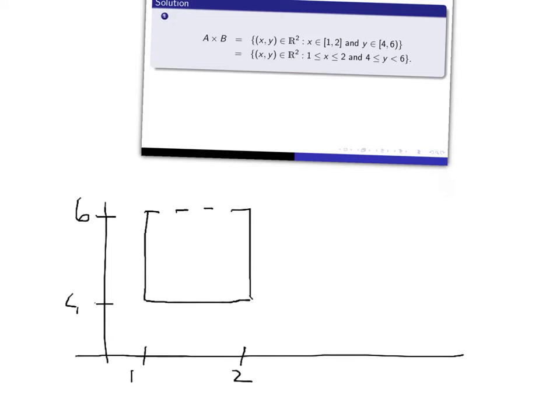Now this gives us further justification for using the notation A × B. If you have an interval you can no longer measure the size of it by the number of elements in it but you can measure the size of it by measuring its length. Now the set A in this example has a length of 1 because it's an interval from 1 to 2 and the set B has a length of 2 because it's an interval from 4 to 6. Now how might you measure the size of this rectangular region? Well you can measure its area and the area is exactly (2 - 1) × (6 - 4) and so since the size of the sets A, B and A × B are related in that way again it seems like a reasonable notation to refer to the Cartesian product as A × B.